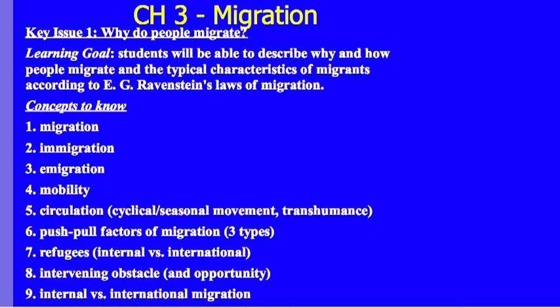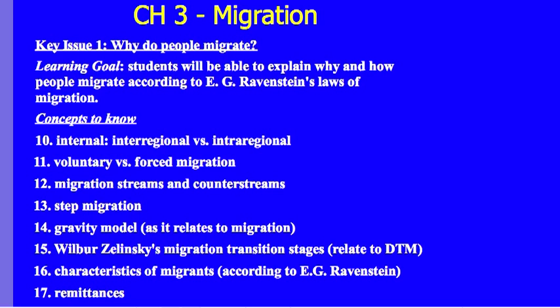The key concepts include: migration, immigration, emigration with an E, mobility, circulation (which is cyclical), seasonal movement, and specifically transhumance, push-pull factors of migration and the three types, refugees, internal versus international refugees, intervening obstacles or intervening opportunities, internal versus international migration, internal inter-regional versus intra-regional, voluntary versus forced migration, migration streams and counter-streams, step migration, gravity model as it relates to migration, Wilbur Zelensky's migration transition stages as they relate to the demographic transition model, characteristics of migrants according to Ravenstein, and remittances.